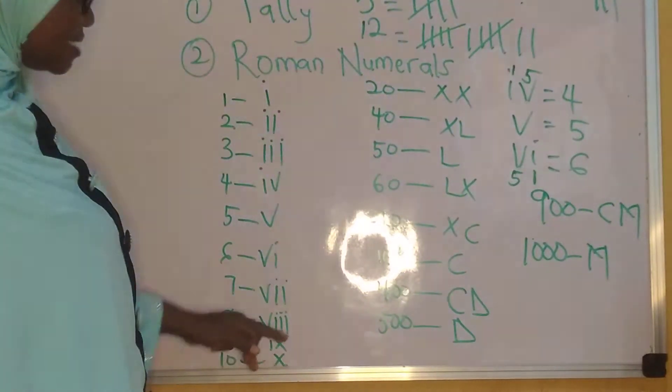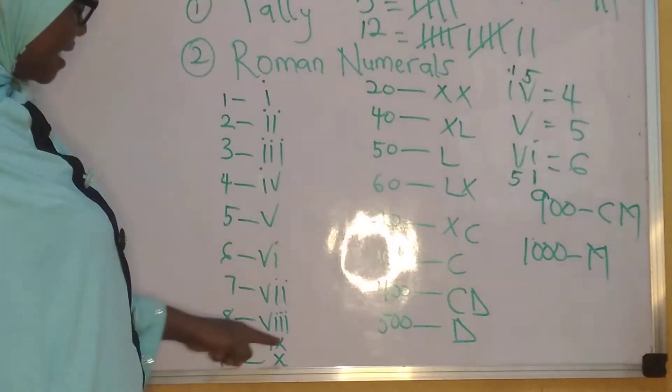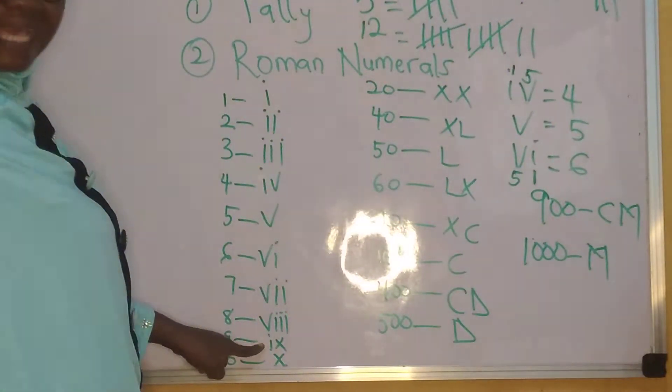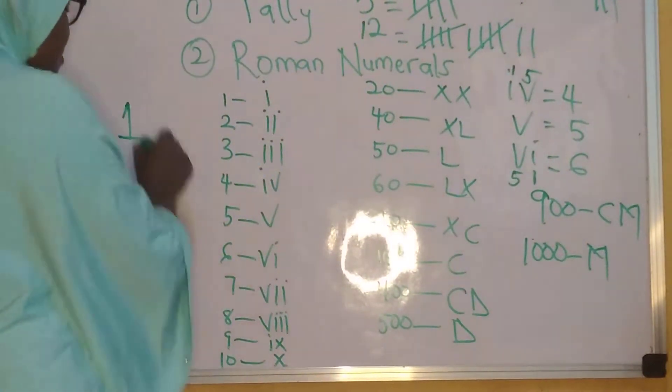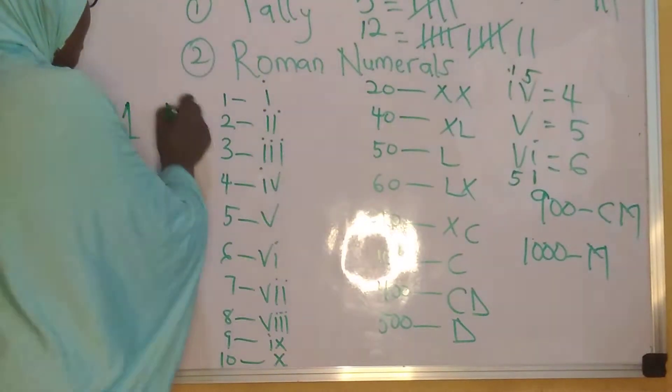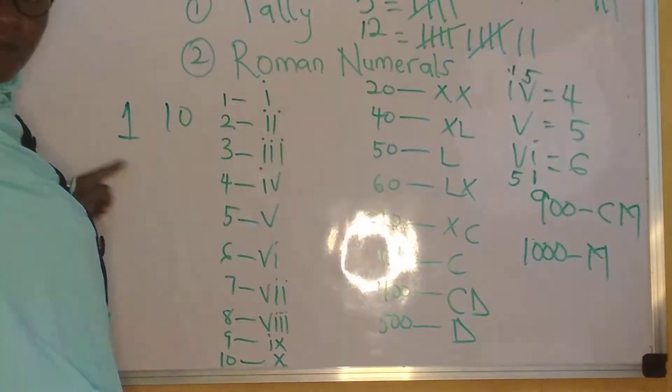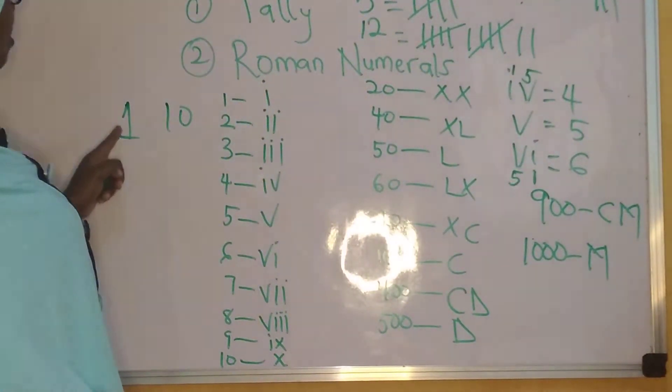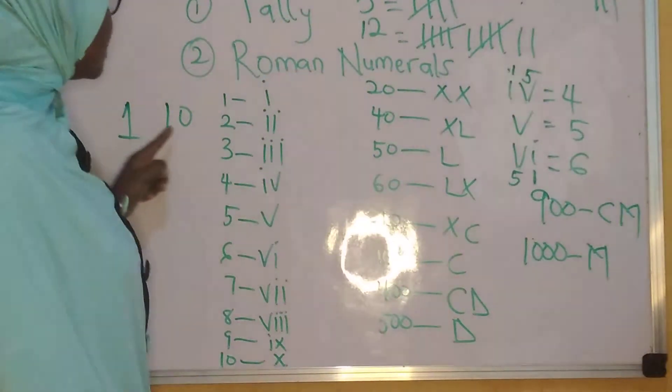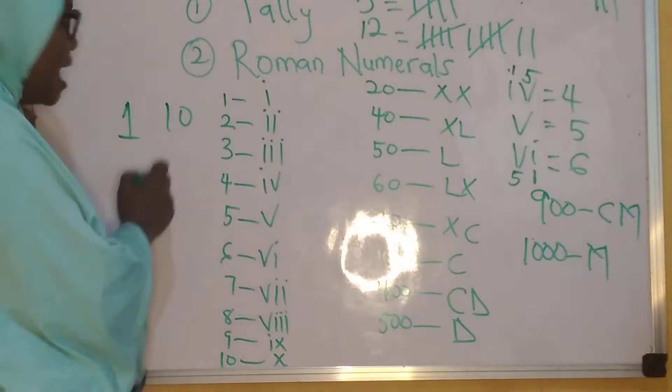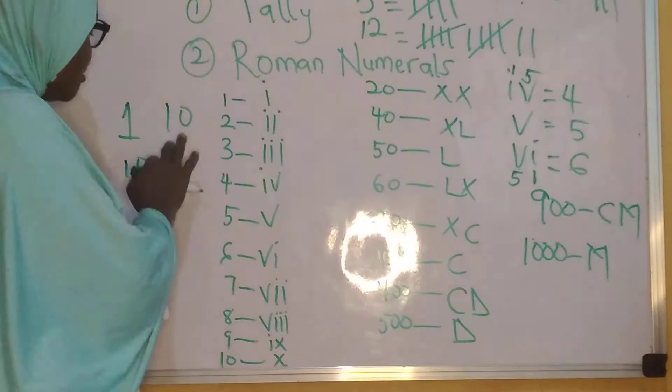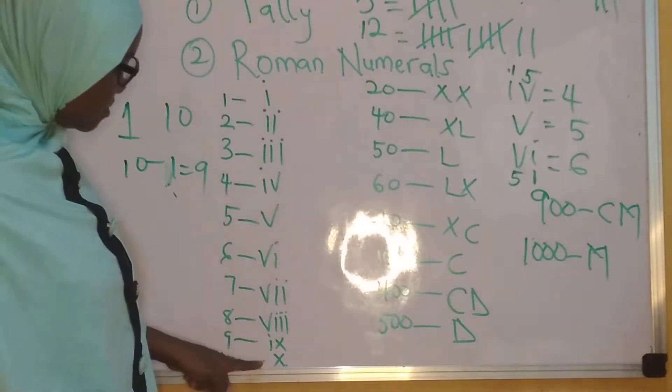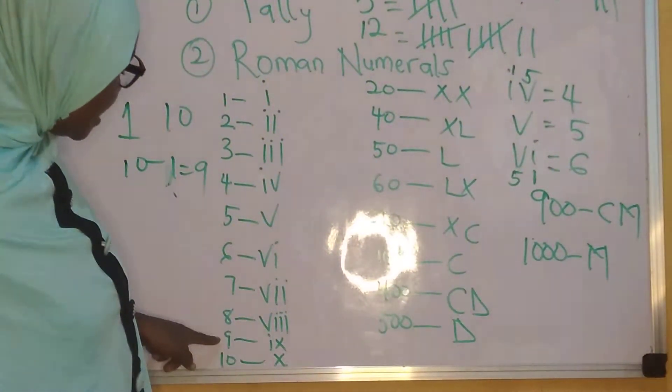Then, we have 9, which is IX. Now, take note again. I and X. 9 is IX. Meaning that I is 1 and X is 10. So the fact that I is at the back of 10, I is written before 10. That means you have to subtract. And that will be 10 minus 1, and that gives us 9. That's why we say IX is 9.